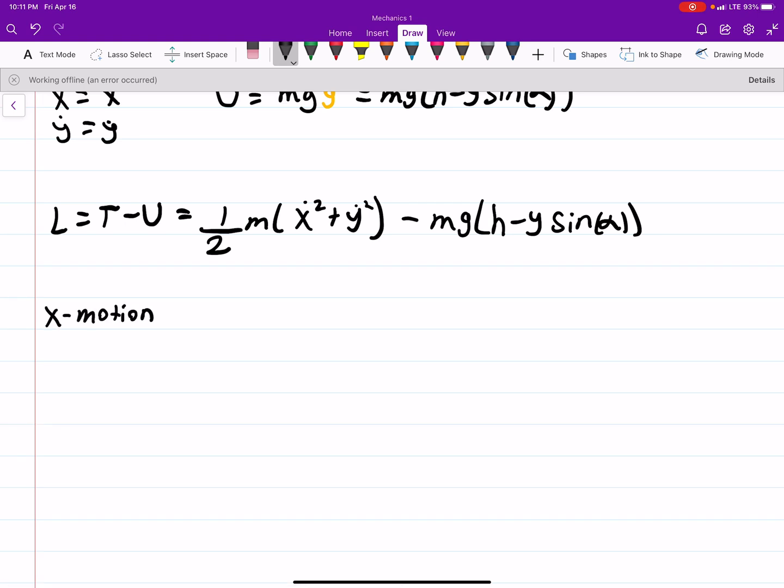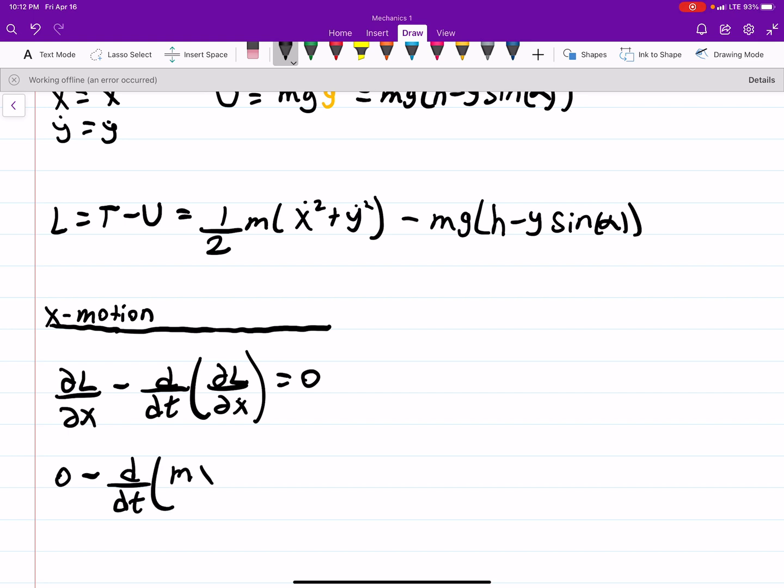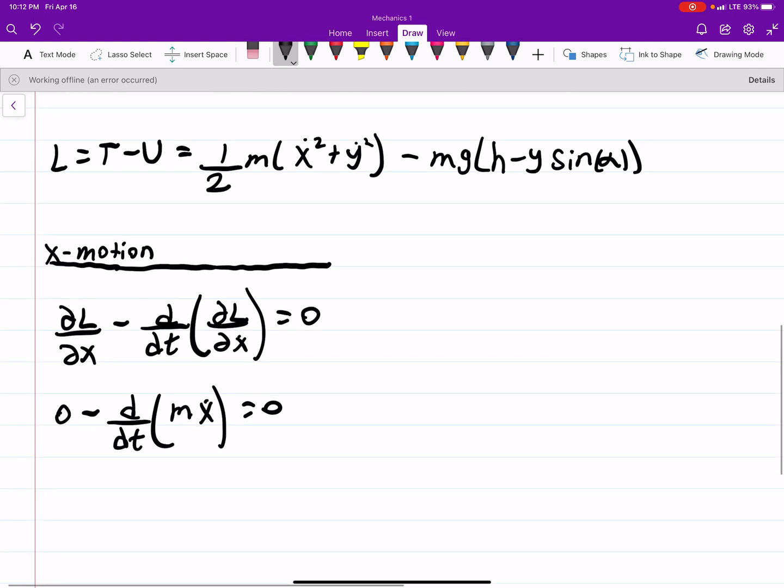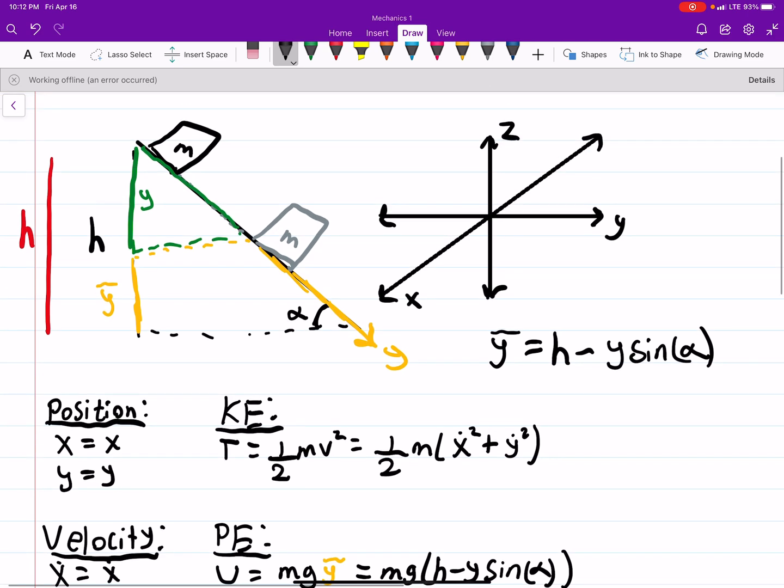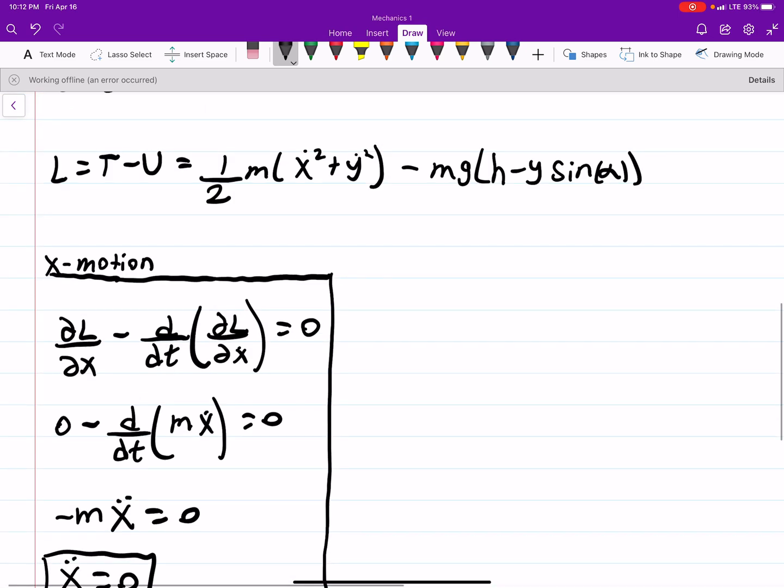The x motion is easy. We'll do that first. So for the x motion, we have dL/dx minus d by dt of the partial L with respect to the derivative equal to 0. You can see we get 0 minus d by dt of m x dot equals 0, or negative m x double dot equals 0, or x double dot is equal to 0. Which makes sense because x is going across the slope not down the slope. So we're not expecting any sort of acceleration there because there's no force in that direction. So that actually makes sense.